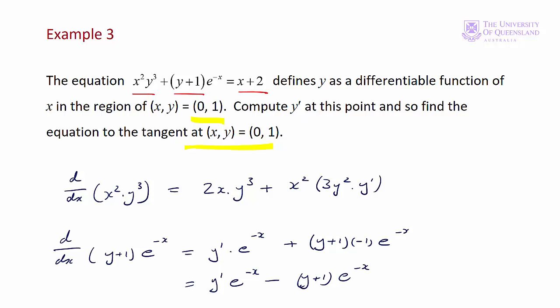The term on the right hand side is x plus 2. d/dx of x plus 2 is simply 1. That implies that the derivative with respect to x of our equation is 2xy cubed plus 3x squared y squared y prime plus y prime e to the minus x minus (y+1)e to the minus x is equal to 1.